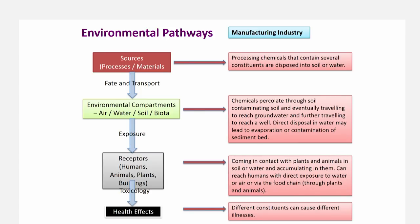The third example is a generic one: for any manufacturing industry, several processing chemicals are used, resulting in a waste stream. Every industry has some waste stream which may be released into water, soil, or air. If released into soil, they percolate and contaminate the soil, eventually traveling to reach groundwater and further traveling to reach a receptor through a well. Direct disposal in water may also lead to contamination of sediments. This can come directly into contact with the receptor through water or through plants and animals via the food chain. Different constituents, depending on what is being released, can cause different illnesses.